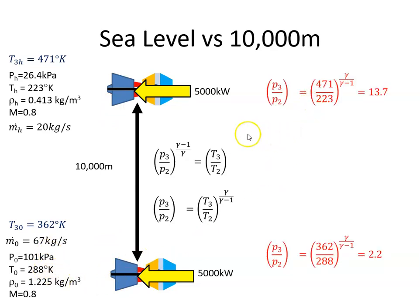I'm going to plug those values in. So up here it's 471 and 223 to the power of gamma over gamma minus one, and remember gamma is 1.4, and that gives me a pressure ratio of 13.7. Whereas at sea level this value here is 362 and the temperature at the inlet of the compressor is 288, and that gives me a compression ratio of 2.2.